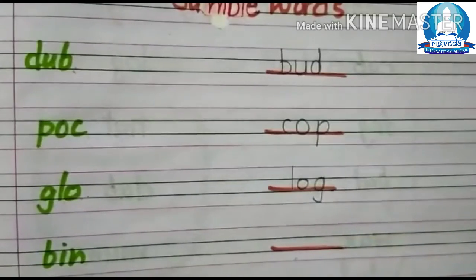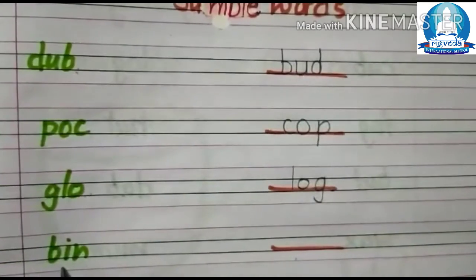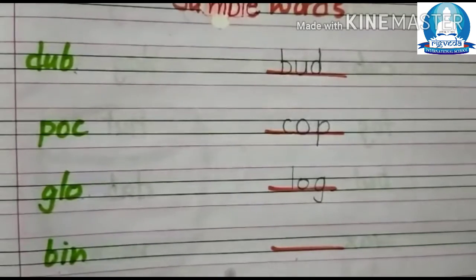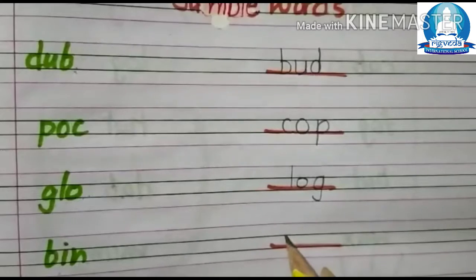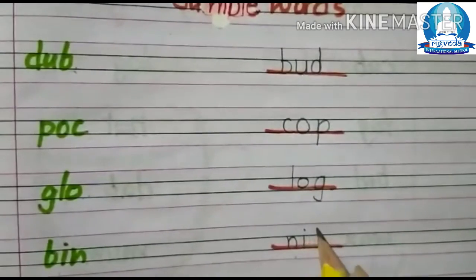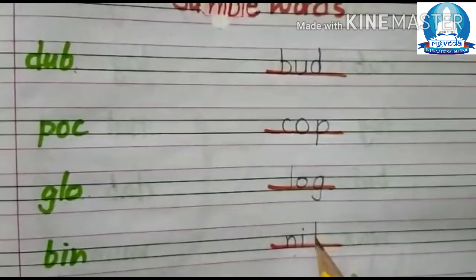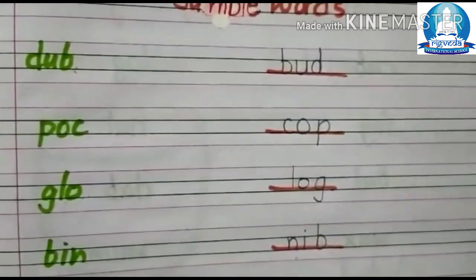Next is B, E, N. From this we will make Nip. N, E, B. Nip.